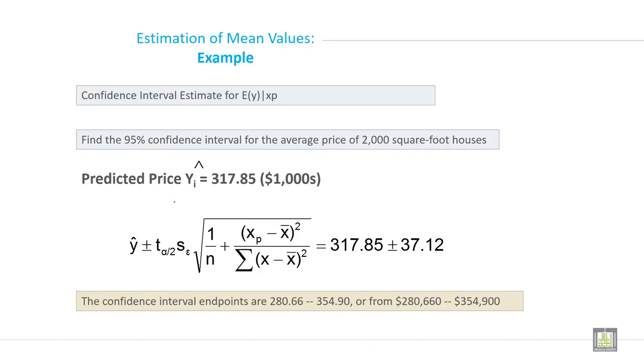So when you put all this value in this formula, you will get 317.85 plus minus 37.12. The confidence interval endpoints are 280.66 to 354.90, or from $280,660 to $354,900.